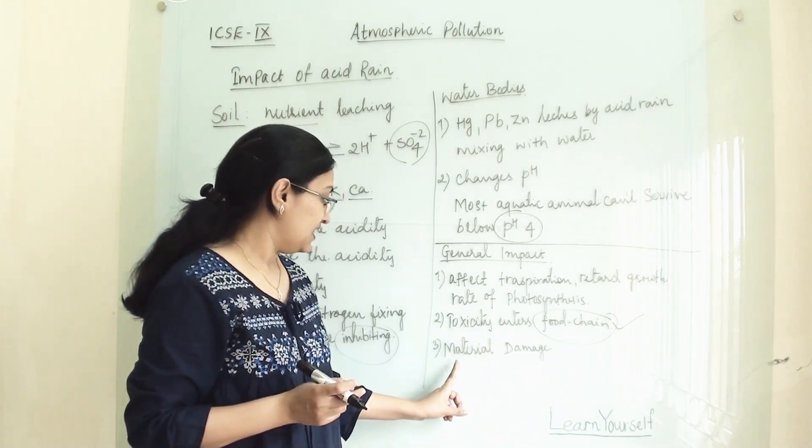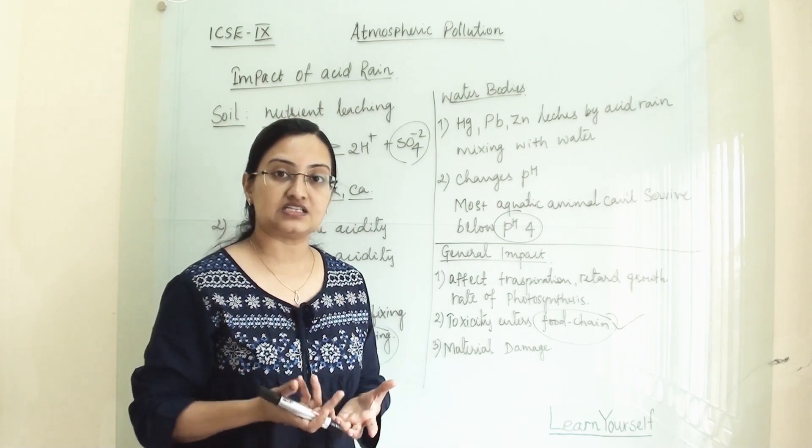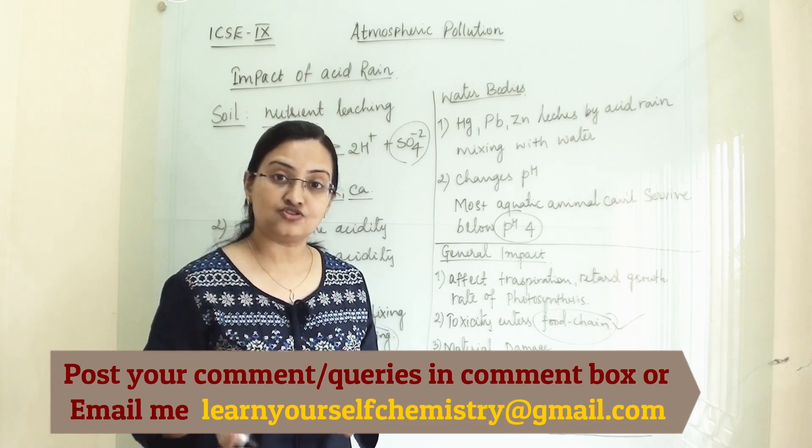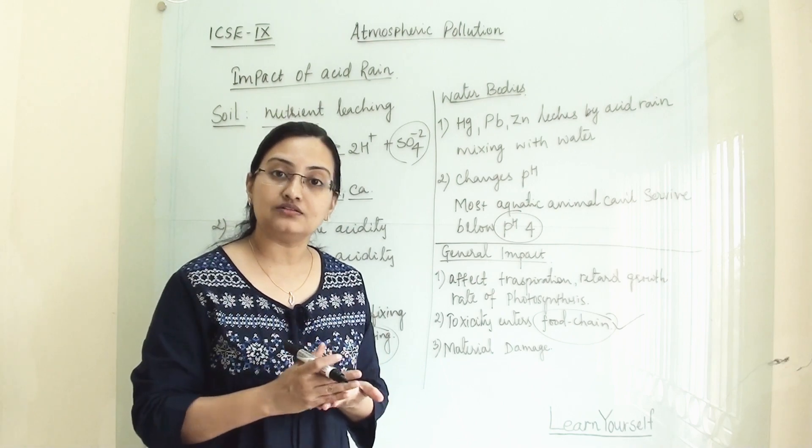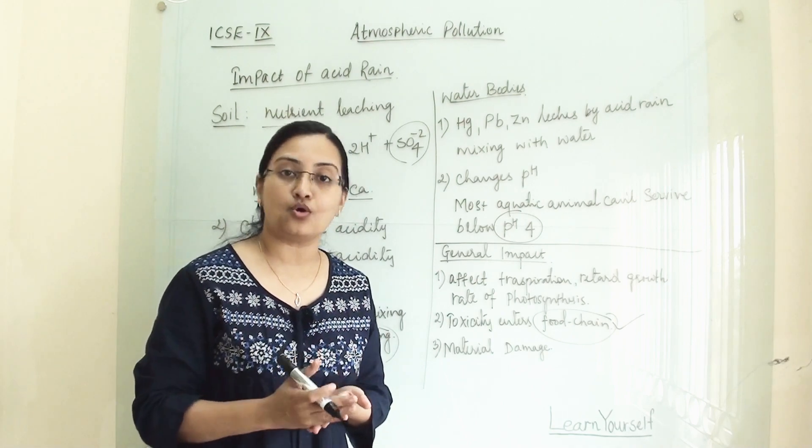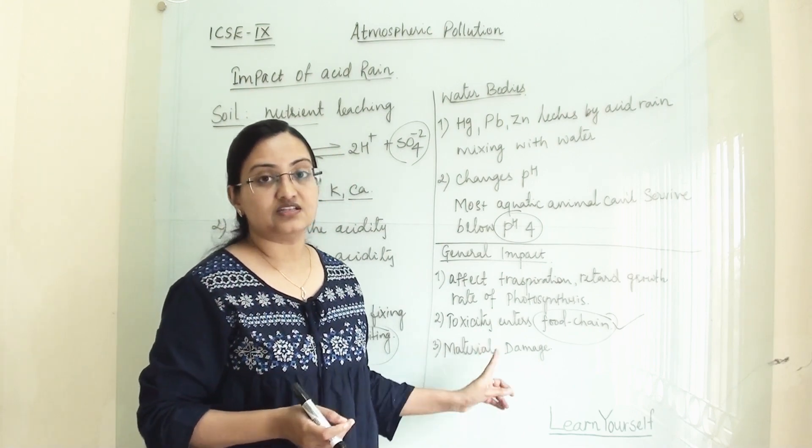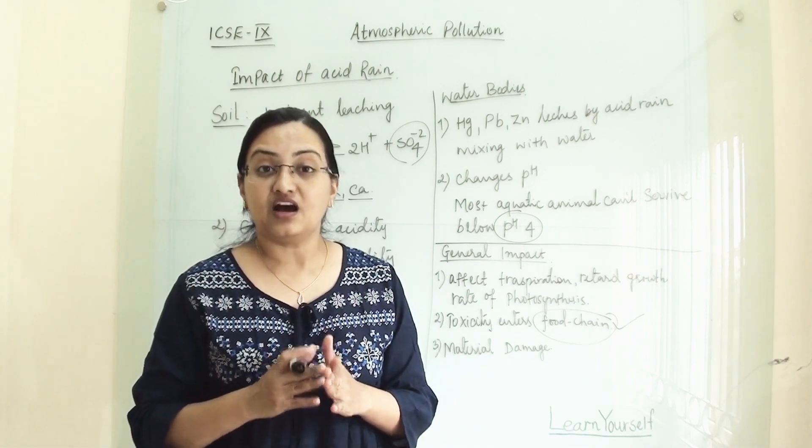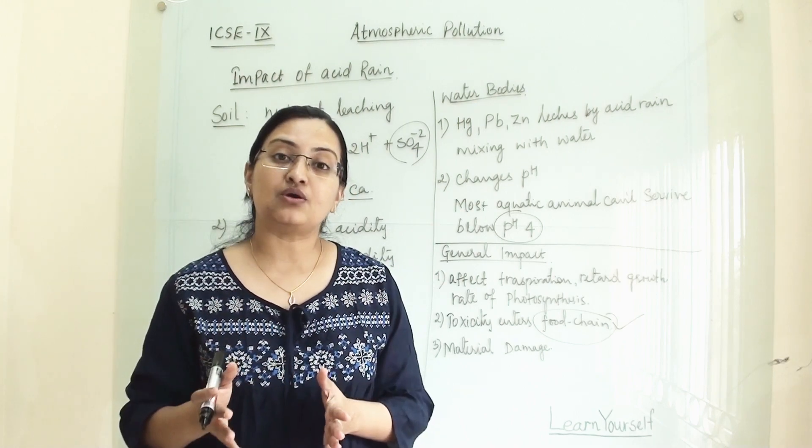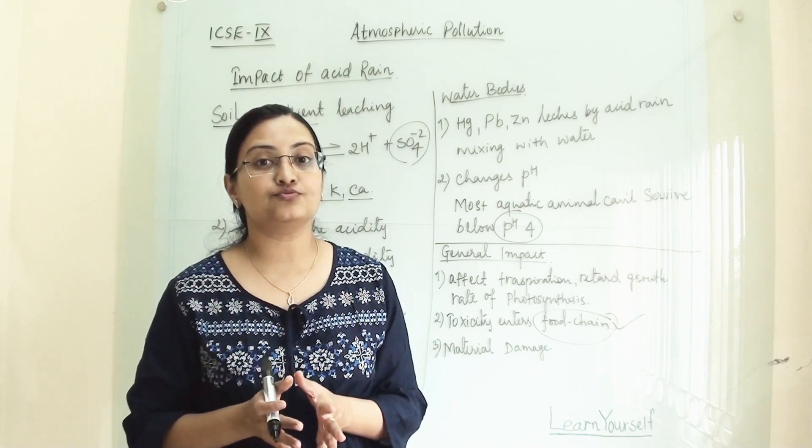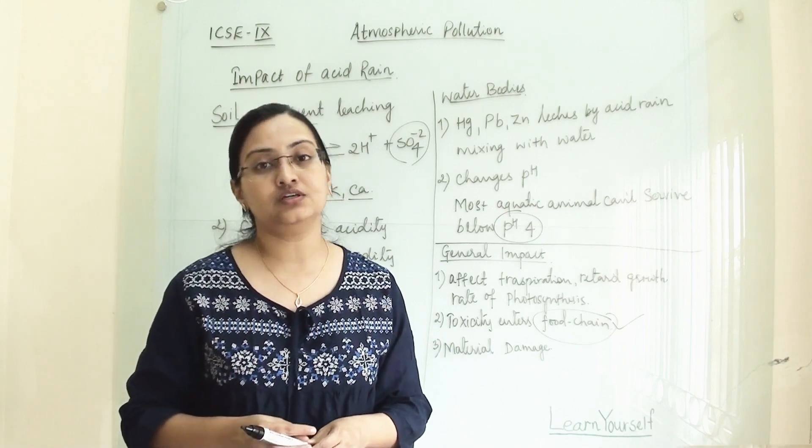Now material damage. In terms of material damage, all the metal surfaces, sculptures, the plaster of Paris statues, all this will be affected because acid will react with all these things and corrode them. So this causes material damage. Acid rain is very harmful for human beings and our ecosystem, and it generates because of human activity. Humans are contributing to 70 to 80 percent of the pollution and pollutants to the earth.